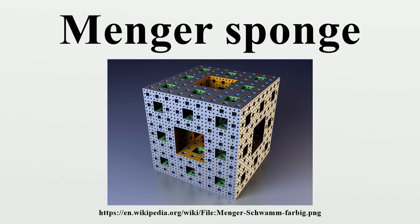The Menger sponge is a closed set. Since it is also bounded, the Heine-Borel theorem implies that it is compact. It has Lebesgue measure 0. It is an uncountable set. The Lebesgue covering dimension of the Menger sponge is 1, the same as any curve.